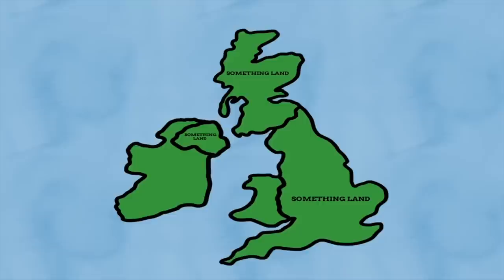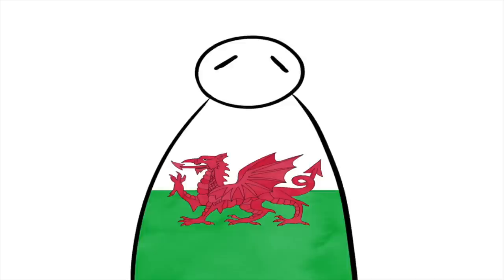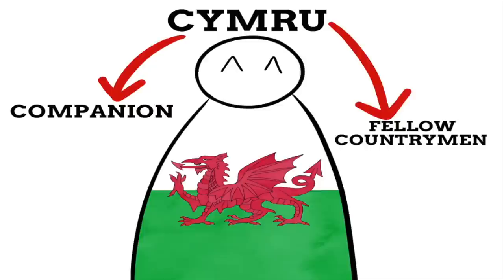Just as we're getting into the groove of UK countries being called something-land, we have Wales to throw a spanner in the mix. One prominent theory is that the name Wales comes from the Proto-Germanic word Walha, meaning things like stranger or foreigner — a name given from Anglo-Saxon origins, hence why it refers to the Welsh as foreigners. In the Welsh language, Wales is called Cymru, which means companion or fellow countryman, so the native name is a much nicer one.